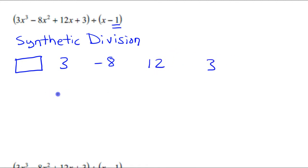I'm going to skip a line, leave space for a row of numbers. And I'm going to put a box here at the end. Now, in this box, I put the opposite of this number right here. So this is going to be a positive 1.